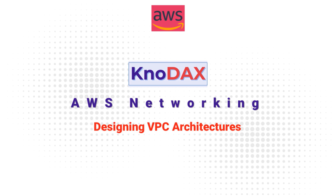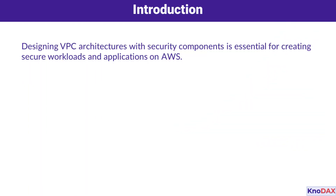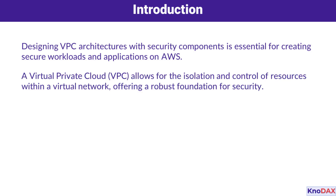When designing VPC architectures, it's essential to include security components to create secure workloads and applications on AWS. A virtual private cloud, or VPC, provides isolation and control over resources within a virtual network. This serves as a robust foundation for security, allowing you to safeguard your resources effectively.